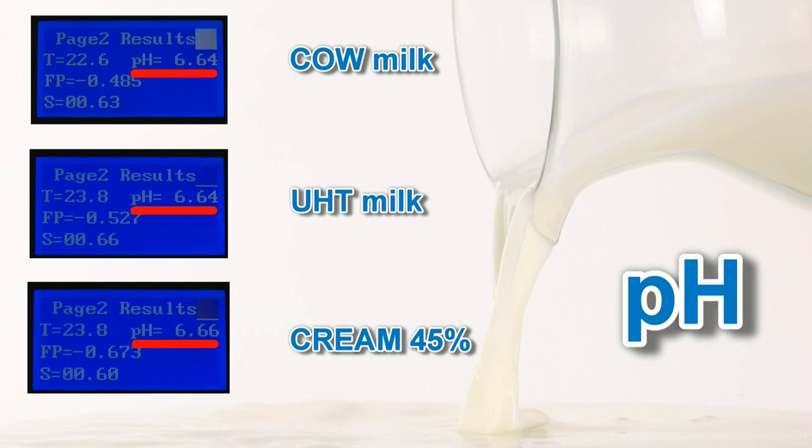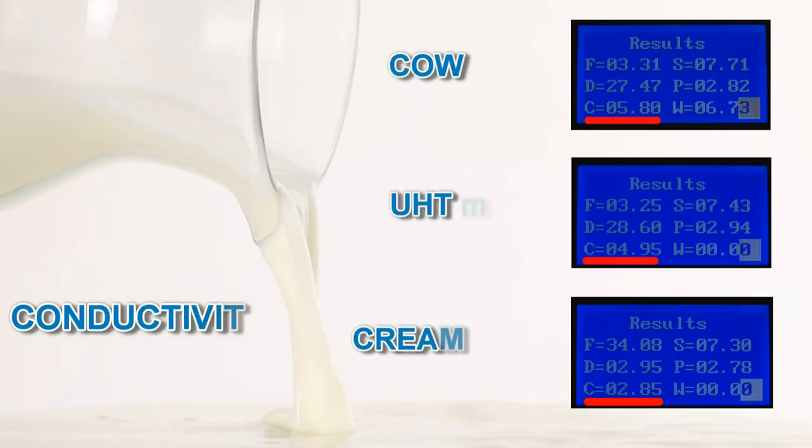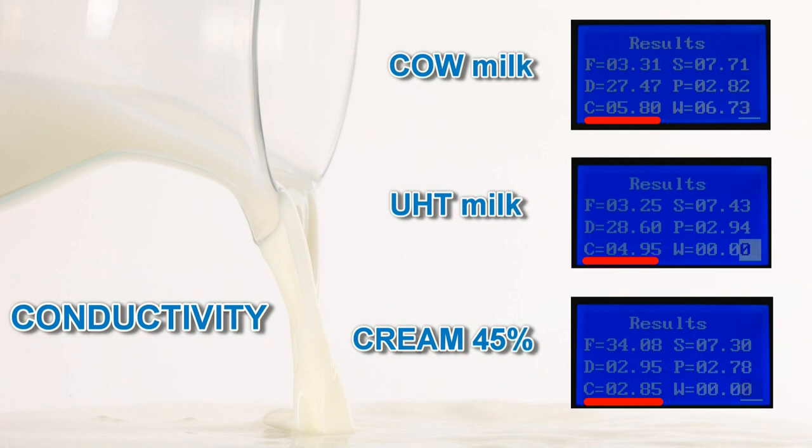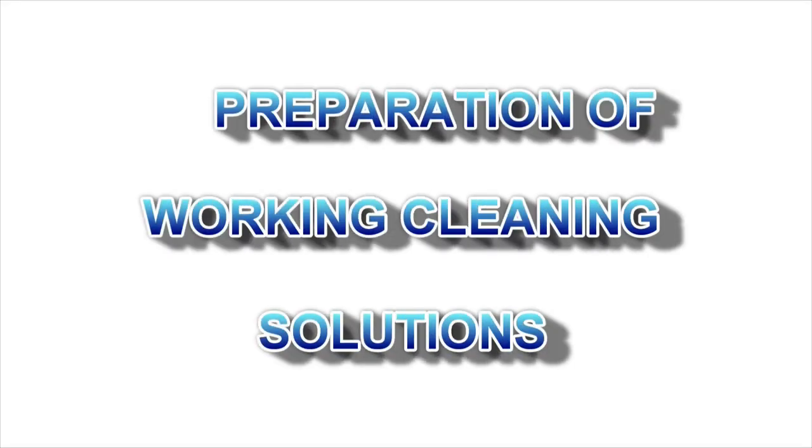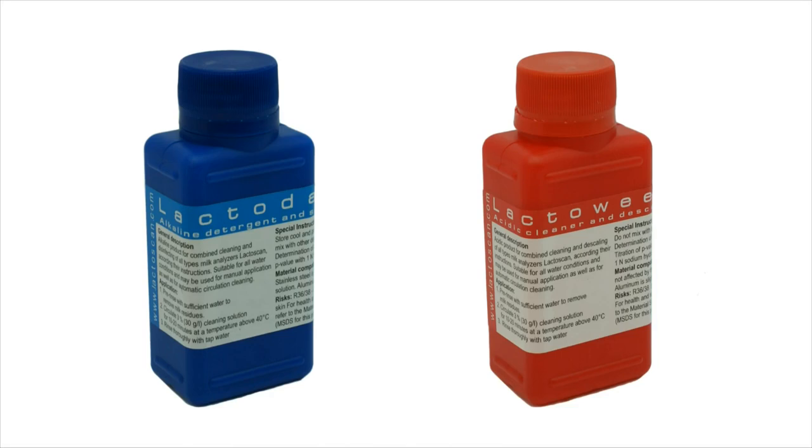Cow, UHT, cream 45%, pH measurement. Conductivity measurement is an option. If the analyzer has the embedded function conductivity measurement, its result replaces the lactose results which appear on page 3. This function allows determination of some of the falsifications made with milk, as for example added table salt in it, or may be used as a warning for farmers for possible infection of the animals with mastitis.